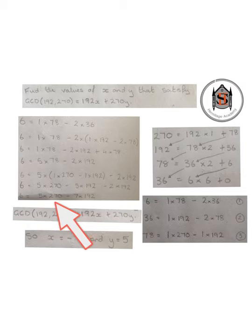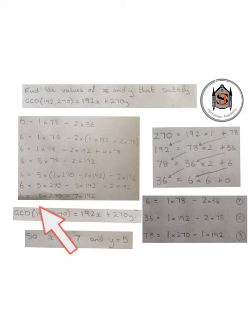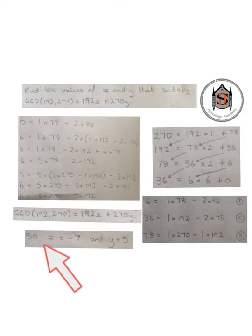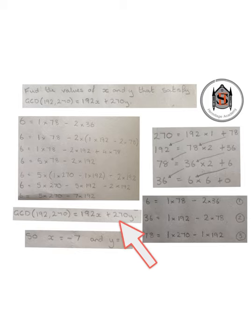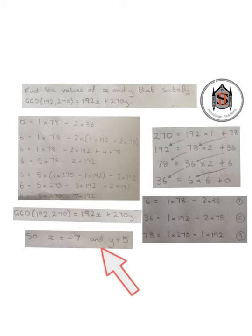All we need to do now is read off x and y from the coefficients. Be careful: x is the number in front of 192, which in this case is minus 7, so x equals minus 7. And y is the number in front of 270, which we read off as 5, so y equals 5.